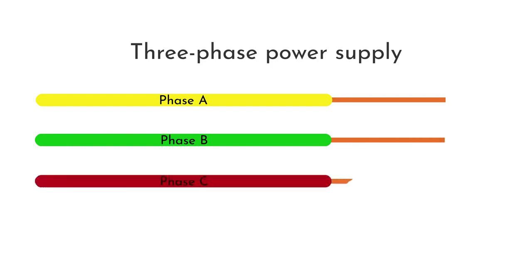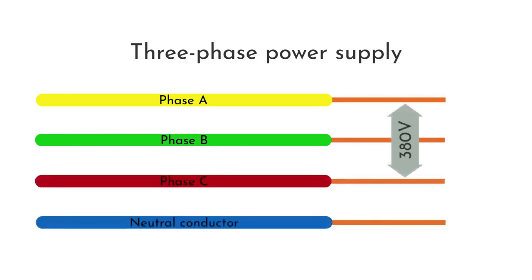The voltage between phase conductors equals to 380 volts, while the voltage between each phase and neutral conductors sums up to 230 volts. If this type of circuit is used, the load must be uniform for each phase conductor.